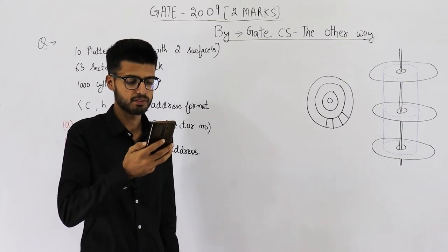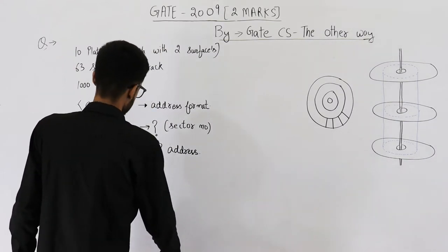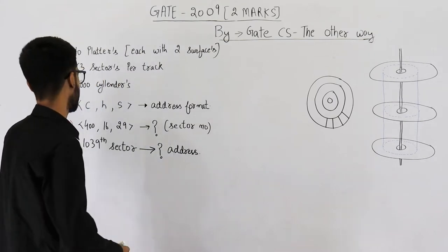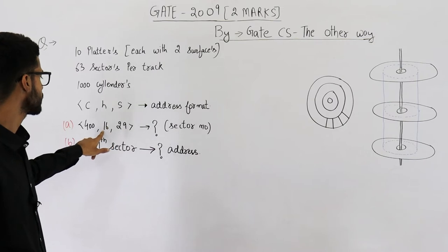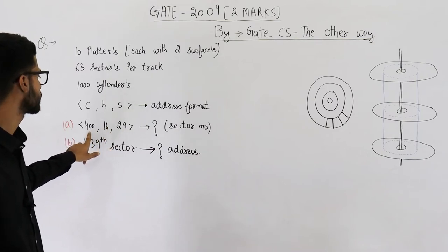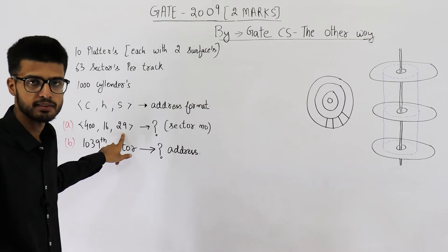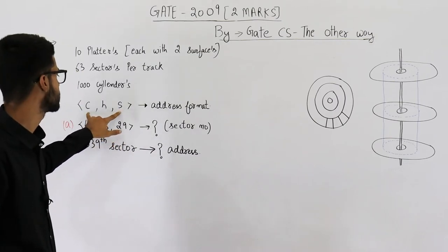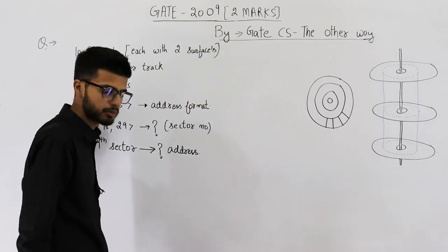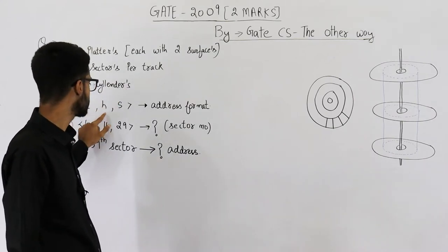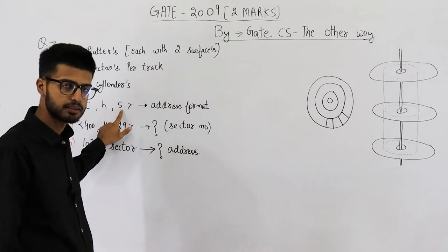They are asking you to find the sector number corresponding to the address 400,16,29. This address uses the format CHS — so 400 is the cylinder number, 16 is the surface number, and 29 is the sector number.